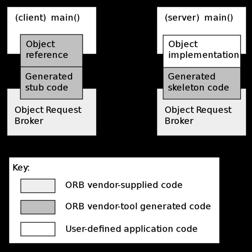The CORBA interface definition language provides the language and OS-neutral inter-object communication definition. CORBA objects are passed by reference, while data are passed by value. The combination of objects by reference and data by value provides the means to enforce strong data typing while compiling clients and servers, yet preserve the flexibility inherent in the CORBA problem space.